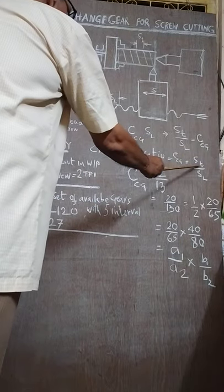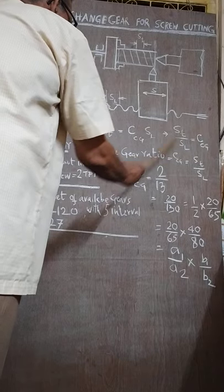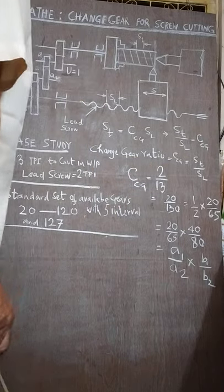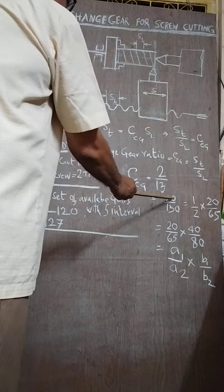Lead of the screw, lead of the pitch, lead of the thread we cut, and lead of the lead screw. So if you have a ratio, it is 2 by 13, this will be 20 by 130.